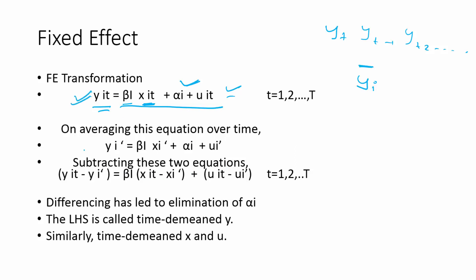We subtract the two equations — the original panel equation and its time-averaged version. The averaged equation has only the cross-section component, while the original has full panel data. When you take the difference, the unobserved effect alpha_i cancels out — alpha_i minus alpha_i equals zero — so it's eliminated from the equation, making estimation possible.